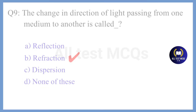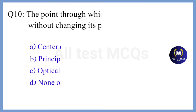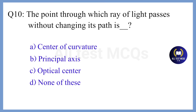Question 10. The point through which a ray of light passes without changing its path is — the correct answer is Option C. Optical center.